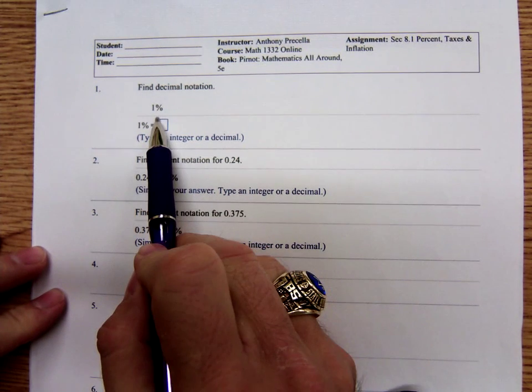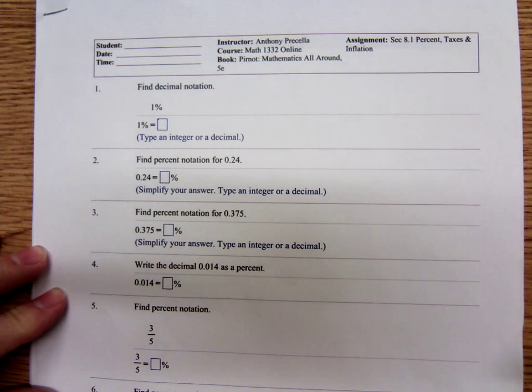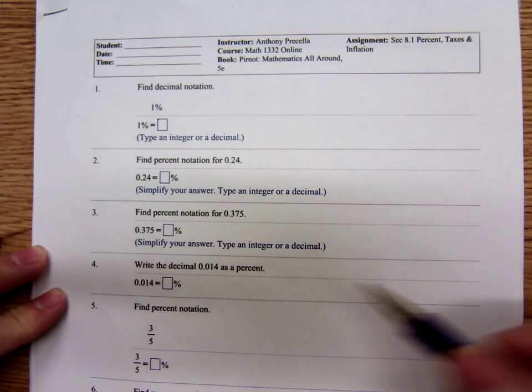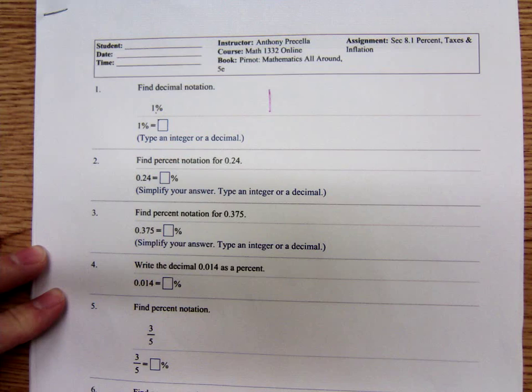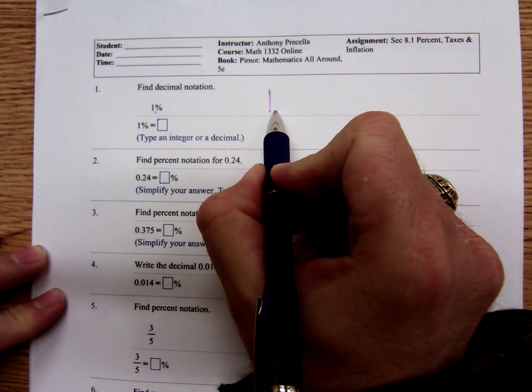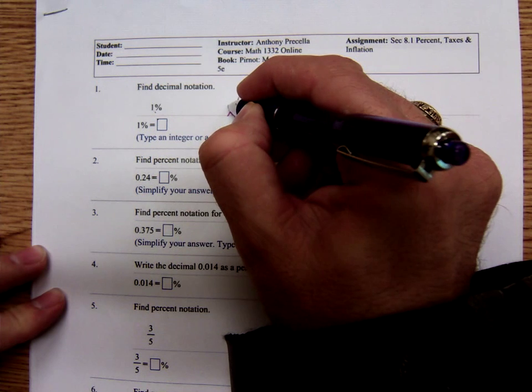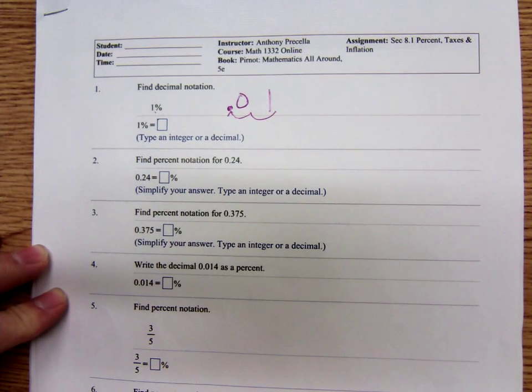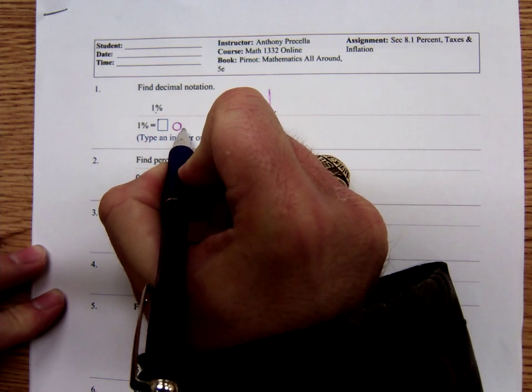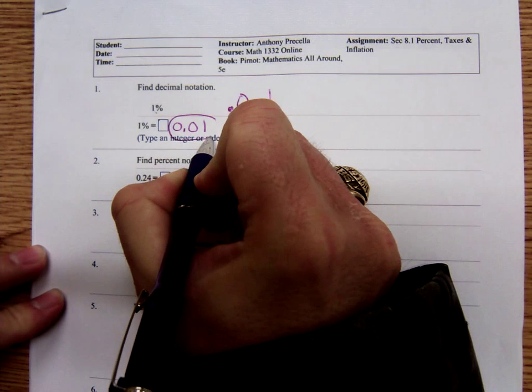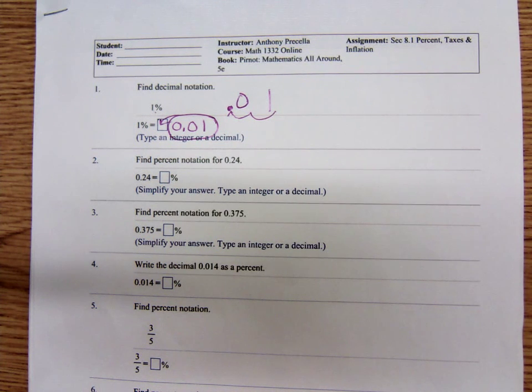A percent means per hundredth. So one percent is the same thing as one over a hundred. To divide by a hundred, you move the decimal point two places to the left. So to write one percent as a decimal, you write the one and we assume there's a decimal point at the end of the number. Now move the decimal point two places to the left: one, two, point zero one. Now some of you may have written zeros in front. So to type in your answer, you can write point zero one, or sometimes you see it written zero point zero one. So to write a percent as a decimal, you move the decimal point two places to the left.